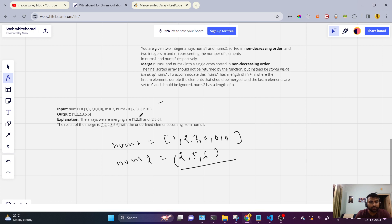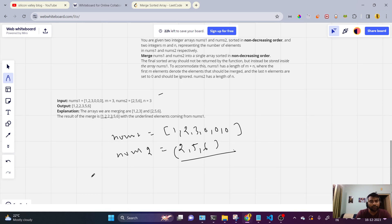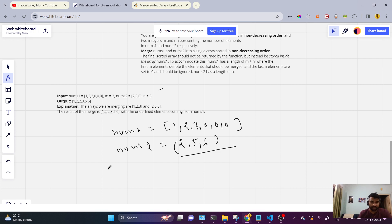We are merging this 1, 2, 3 and 2, 5, 6. The result of merging is 1, 2, 2, 3, 5, 6 with the underlying elements coming from nums1. So we can say we will use two-pointer approach.